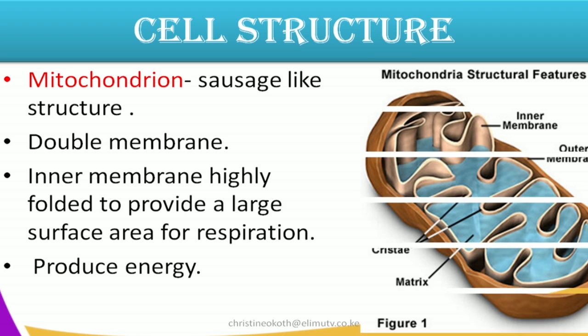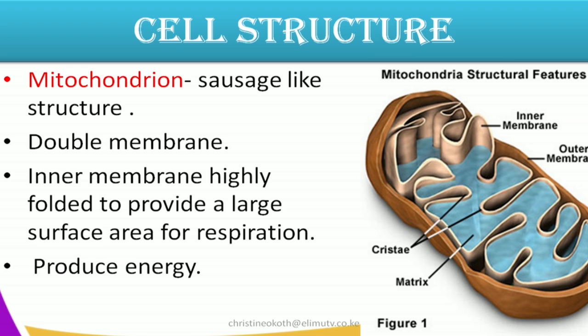The other structure is what we call a mitochondrion and it is a sausage-like structure. It has two membranes — that's why we say it's a double membrane cell structure. We have the outermost membrane and the innermost membrane. The inner membrane is highly folded into something we call the cristae, and it has some fluid inside that we call the matrix. The reason why the inner membrane is highly folded is to provide a large surface area for respiration. The main function of mitochondria is to produce energy via respiration.